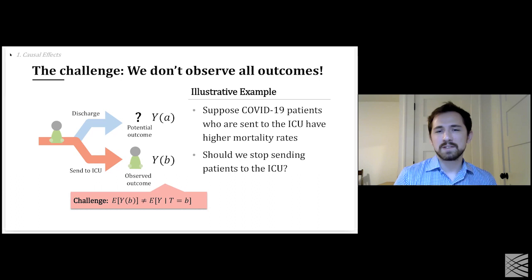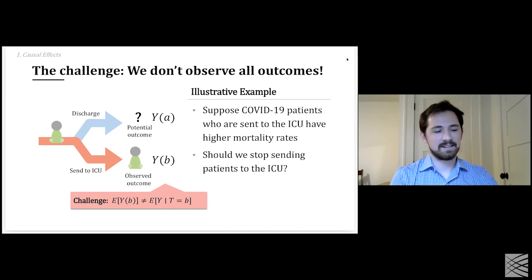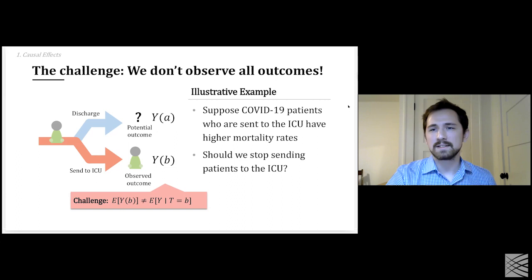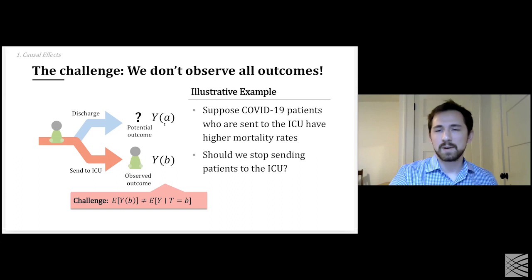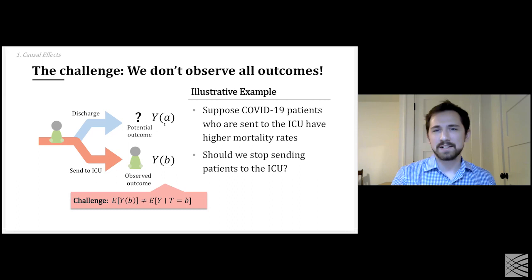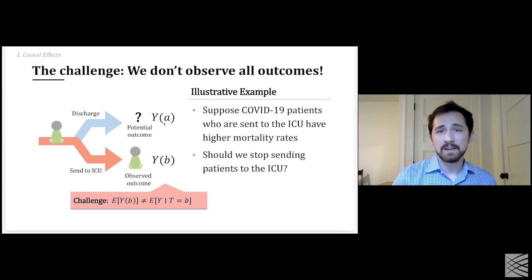It's probably obvious to everyone that we shouldn't stop sending patients to the ICU. Can anyone venture a guess as to why you might see a correlation like this in the data? The answer: more sick people go to the ICU. There's a confounding factor — the patient population prescribed to go to the ICU is different, they're going to be sicker on average. They're going to the ICU for a reason.